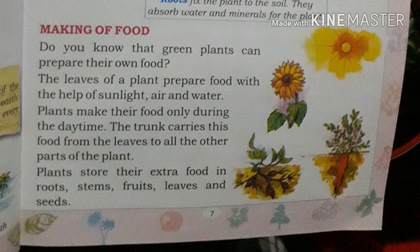The third part of the chapter is the making of food. Green plants can prepare their own food. Unlike humans and animals, plants don't need to pluck food from elsewhere or kill other animals — plants make their own food. The leaves of a plant prepare food with the help of sunlight, air, and water.